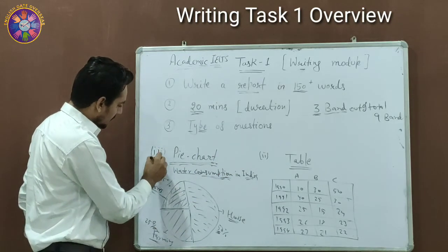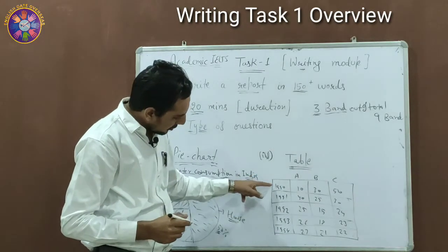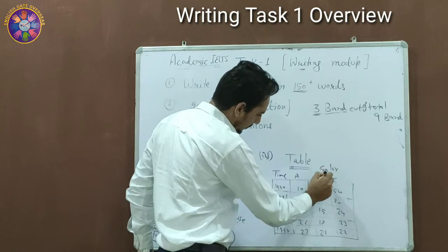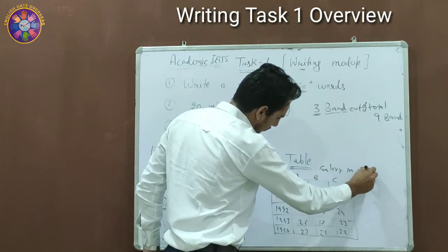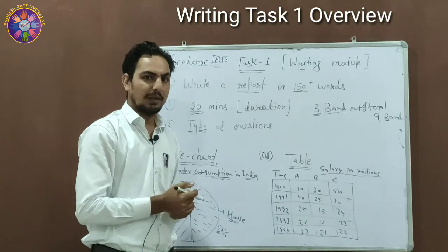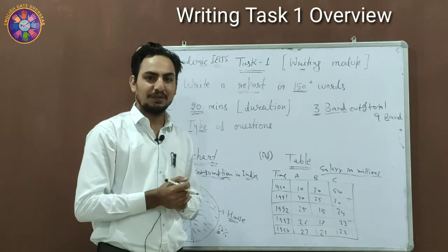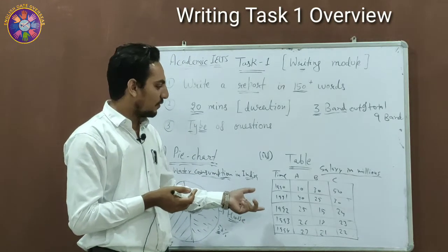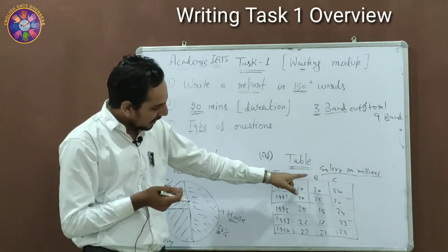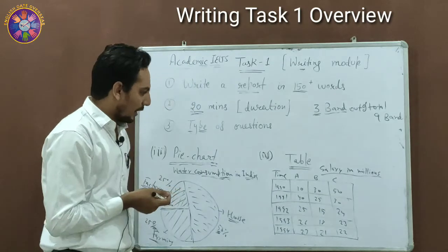The fourth type is a table. It shows data across time periods — for example, from 1990 to 1994 — and may display salaries in millions. Different tables may contain different types of information; this is just an example to give you an overview. The table might show salary data for country A, country B, or country C in millions.